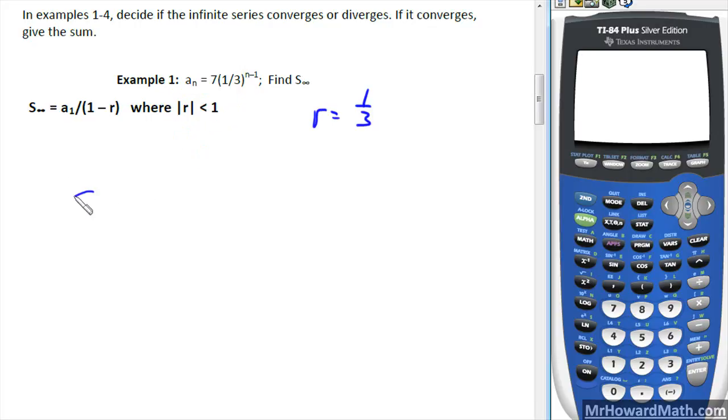So we plug it into the formula. S sub infinity equals a sub 1 divided by (1 minus r). Well, a sub 1, if you know your geometric sequence pattern, would be 7 divided by 1 minus 1/3, because 1/3 is our r value.